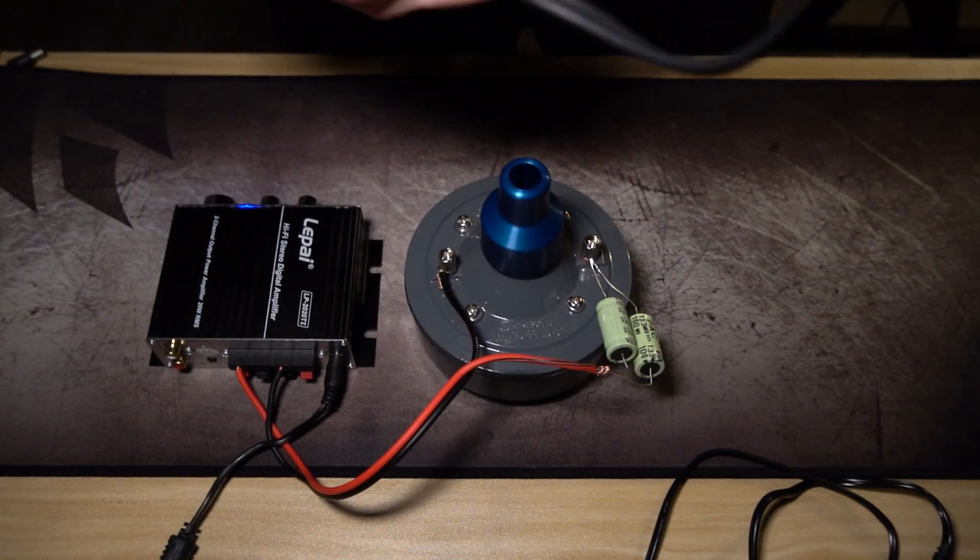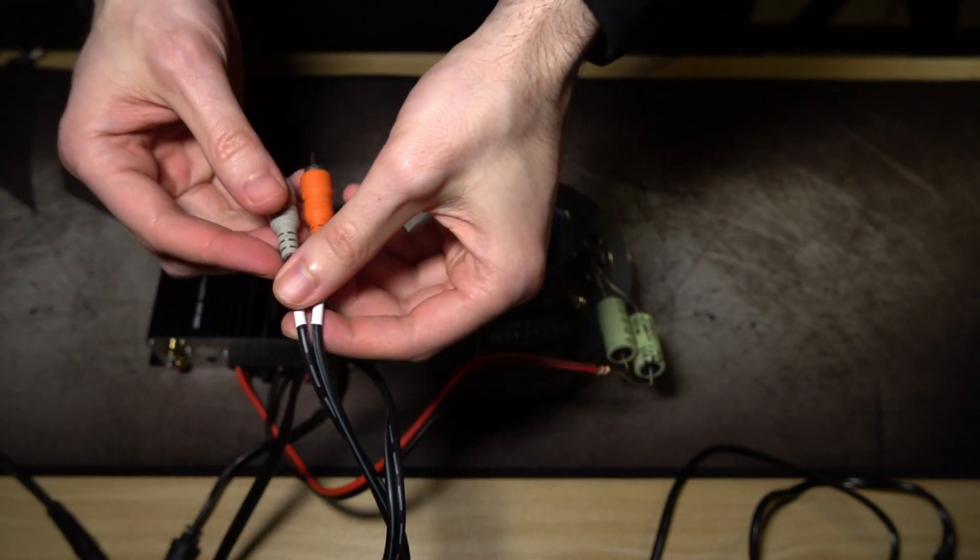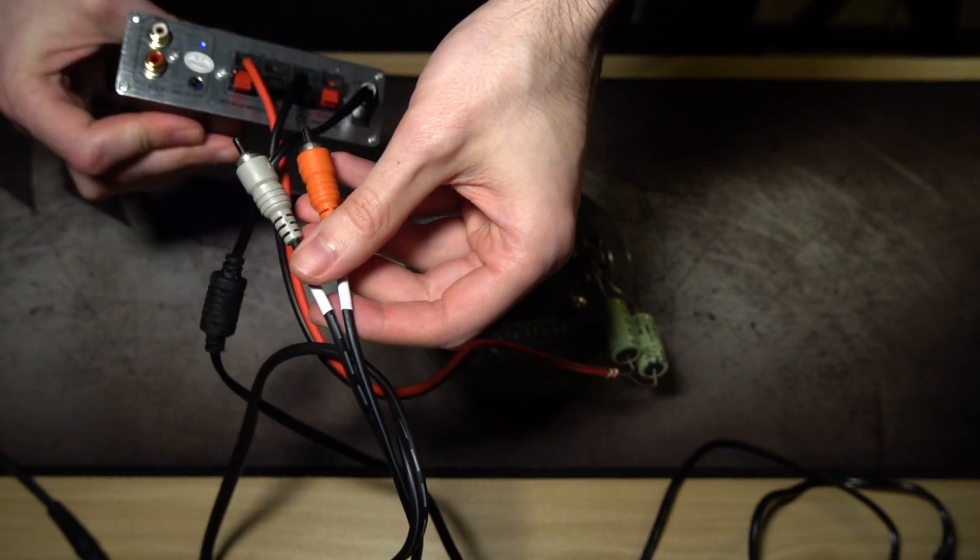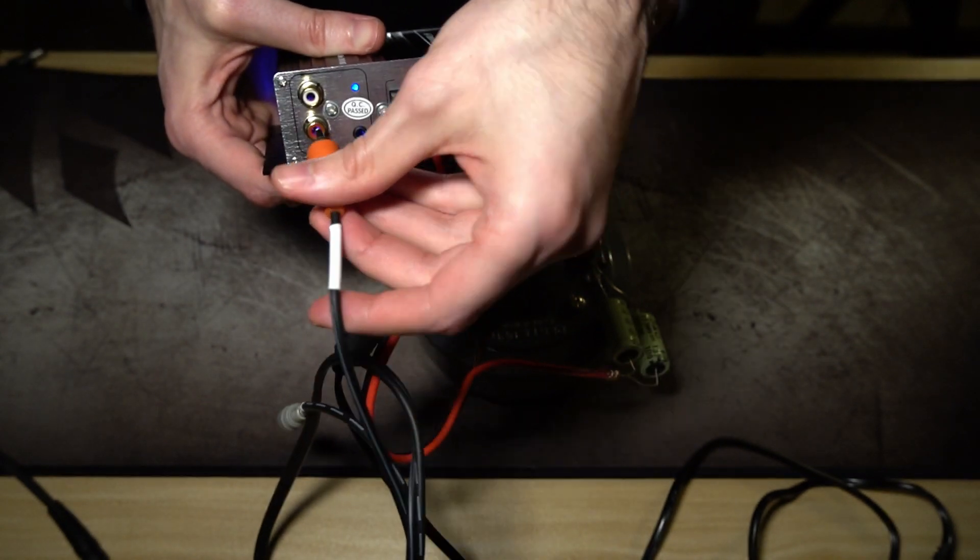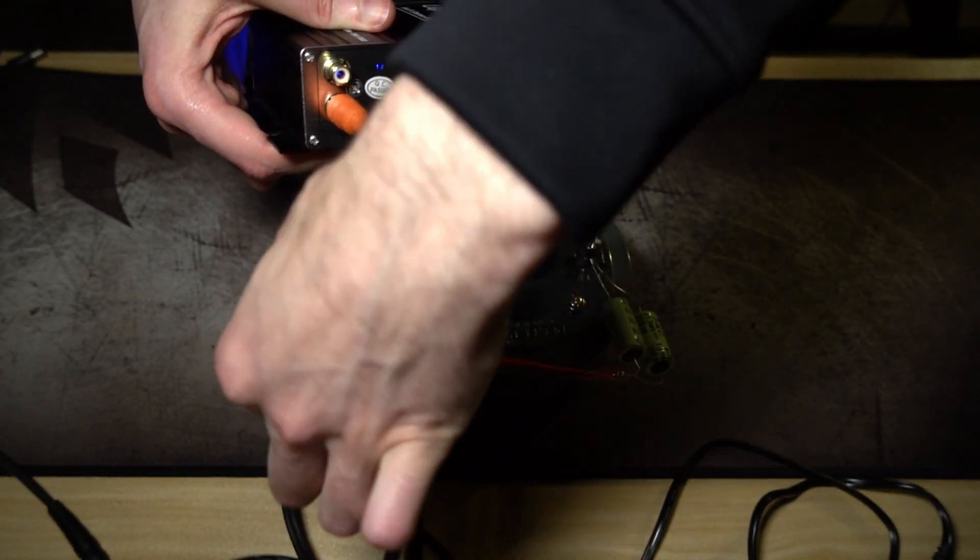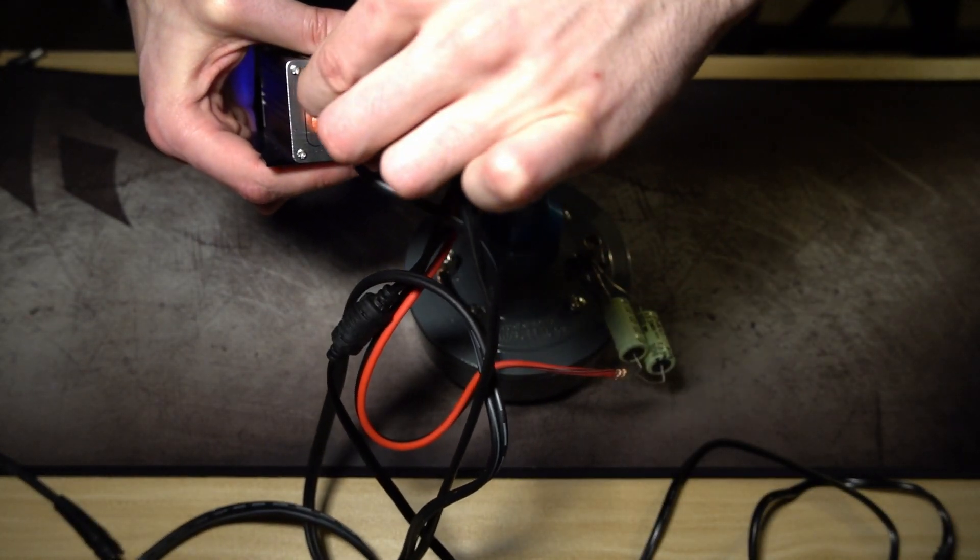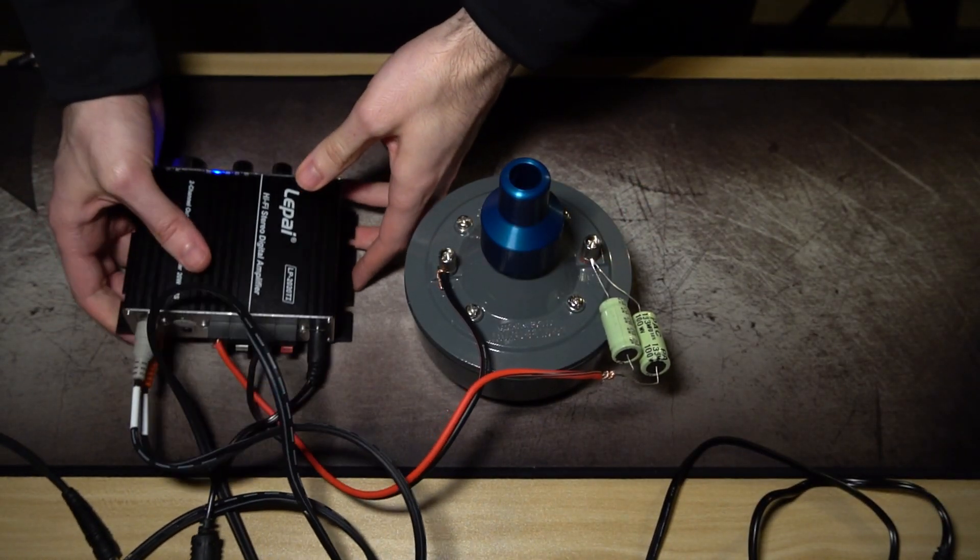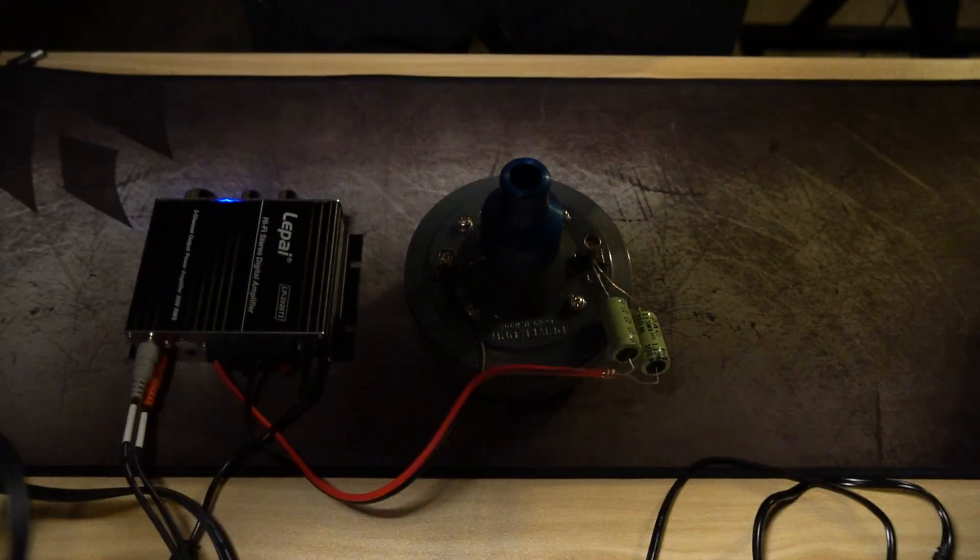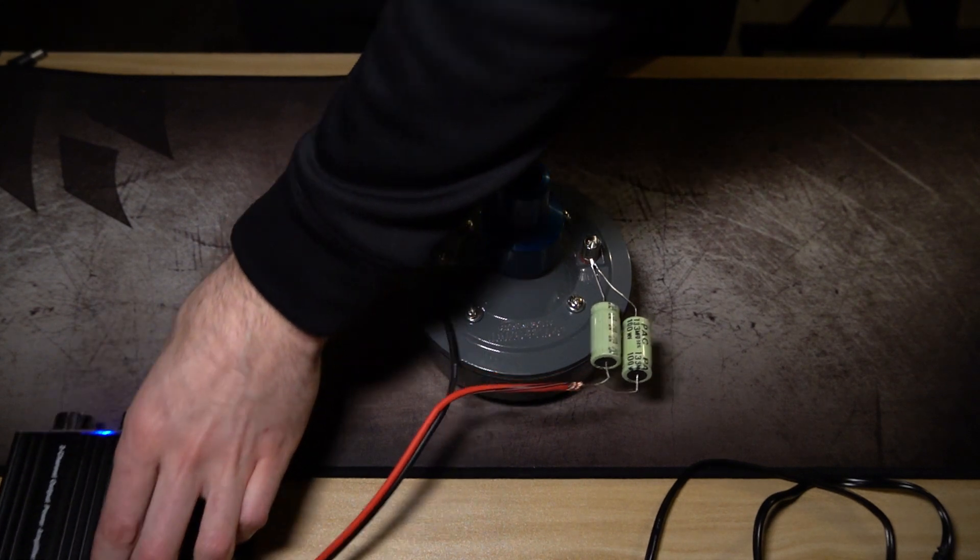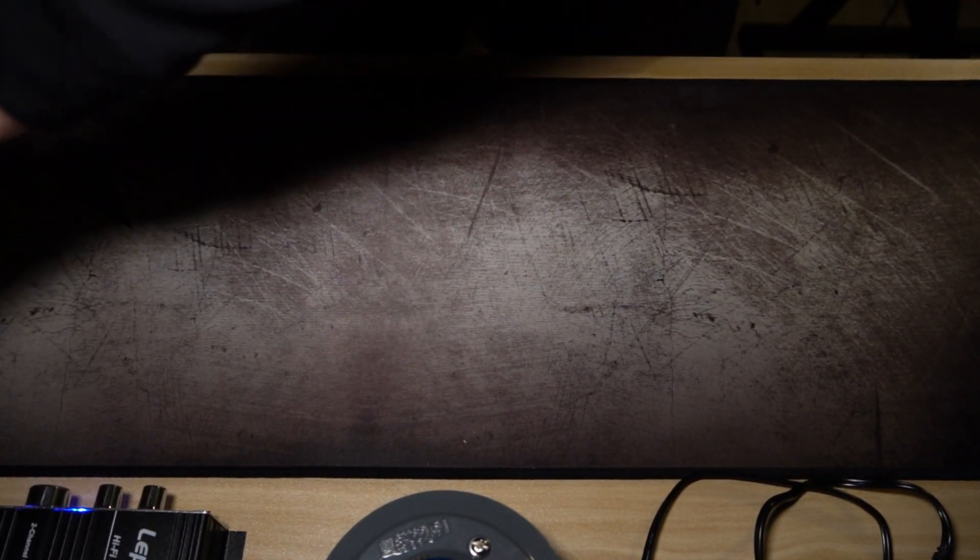You can take your RCA cables, take this end, take your amplifier, put that in the red audio input, and you're going to put the white in the audio input. That's so the sound can go out into the synthesizer.